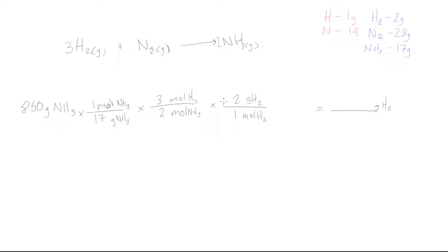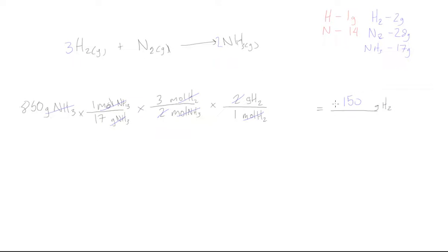Let's check all units cancel: grams of NH₃ cancels, moles of NH₃ cancels, moles of H₂ cancels, leaving grams of H₂. We also cancel the two from the mole ratio with the 2 g/mol of H₂. So we compute 850 × 3 ÷ 17, and punching that into the calculator gives us 150 grams of hydrogen gas.